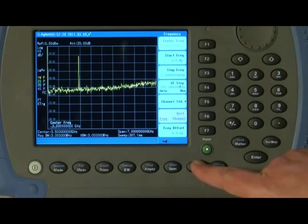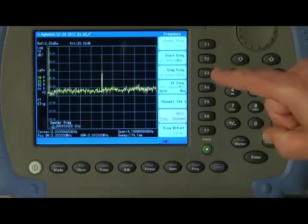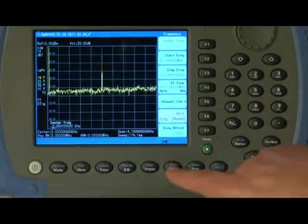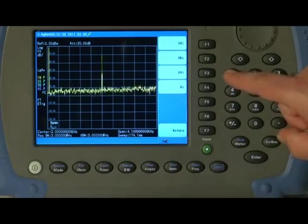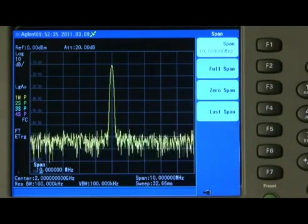So we press frequency, select center frequency, and enter 2GHz. That moves the signal to the center of the screen. Then we adjust the span to 10MHz, and you can see the signal more clearly across the display.